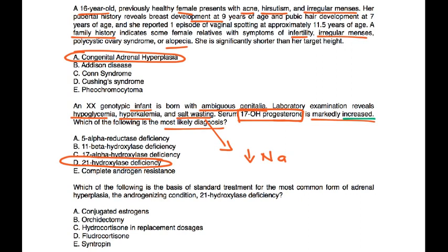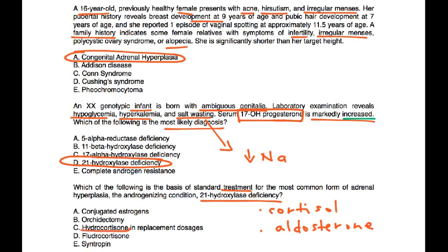Vignette 3 asks: what is the basis of standard treatment for the most common form of adrenal hyperplasia — 21-hydroxylase deficiency? Since cortisol and aldosterone are deficient, you replace them: cortisol with hydrocortisone, and aldosterone with the mineralocorticoid fludrocortisone. In this question, both of those choices are correct.